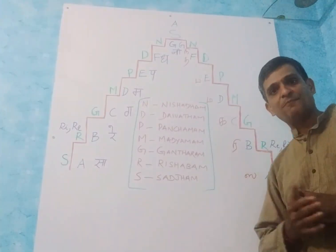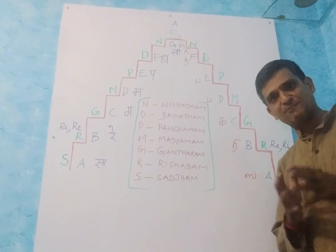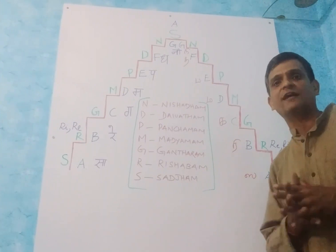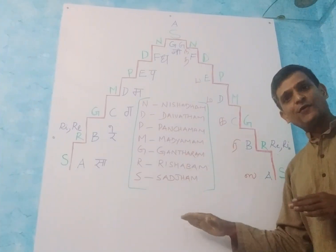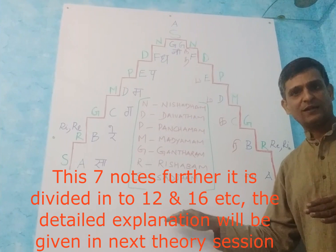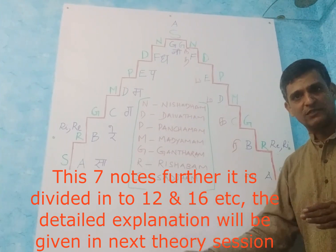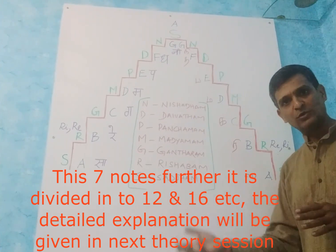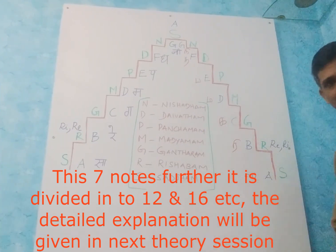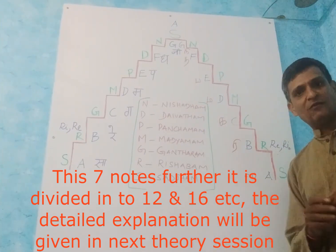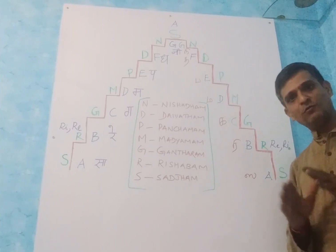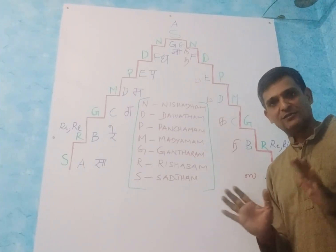While teaching practical, it will be clearly explained how it goes and in which frequency it goes — everything I will explain you. This is the first basic initial theory about the seven notes. Further, it is divided into 12 notes, 16 notes. If you go to the Shruti side, 22, 24 — many things are there. That will be explained later, after learning some practical in this basic theory.